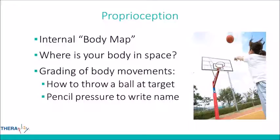Proprioception also helps us grade body movements — it gives our brain feedback on how much force to use when doing something. For example, if you're throwing a ball at a target, you might throw harder from one distance versus another. Or if you're writing your name on a sheet of paper, you know how hard to push down with your pencil.